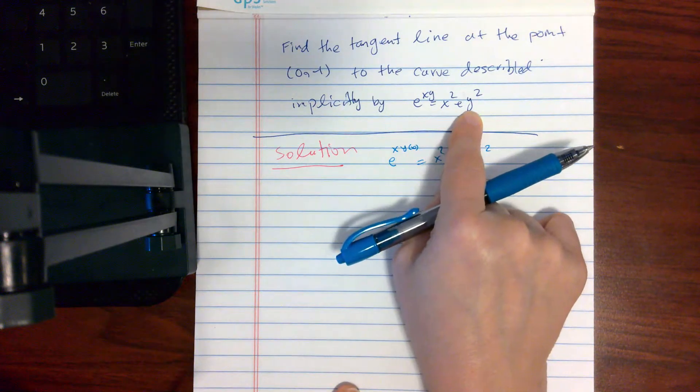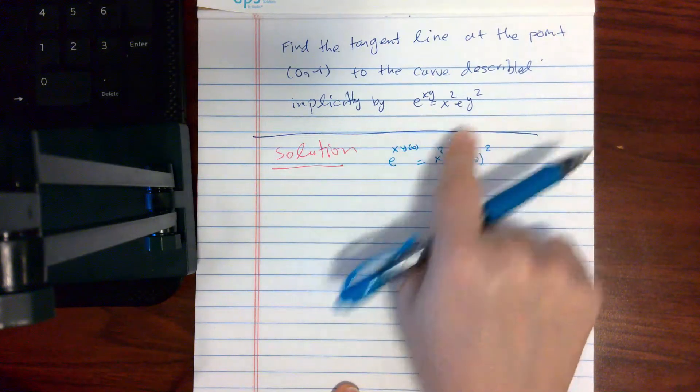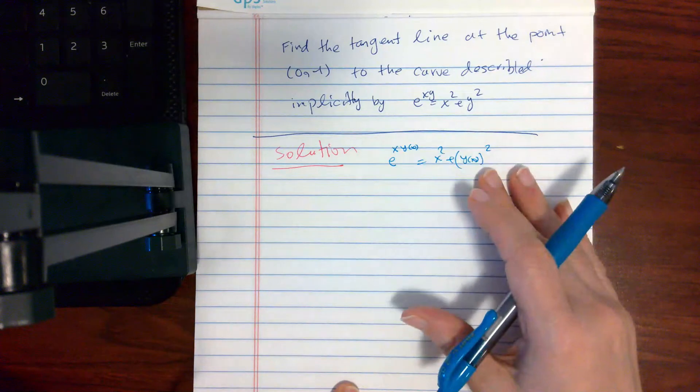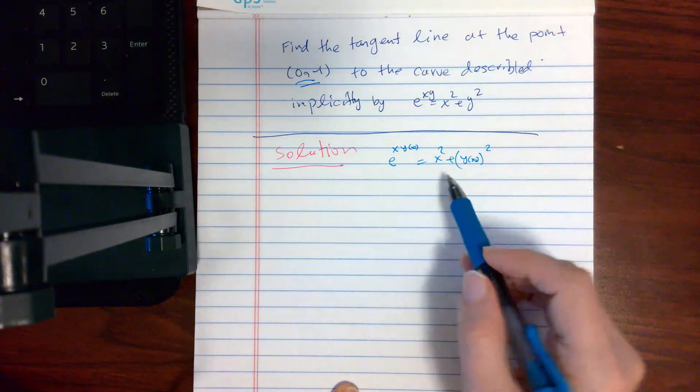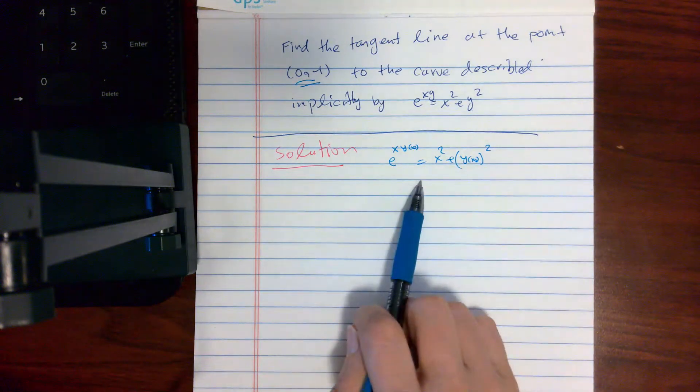Just plug it in and solve for y. And so basically, in here, the point is given. I need the slope. I need to find the derivative of y with respect to x, and that's how we write it out.